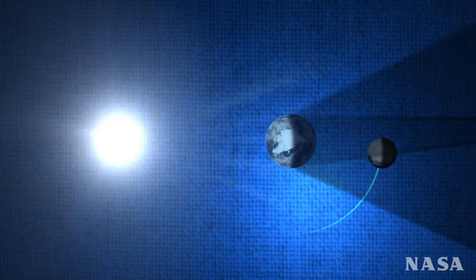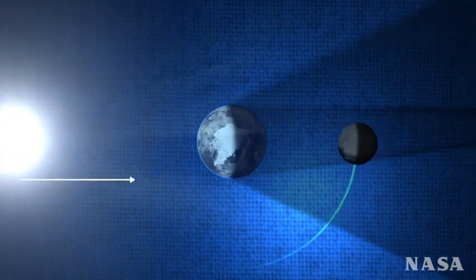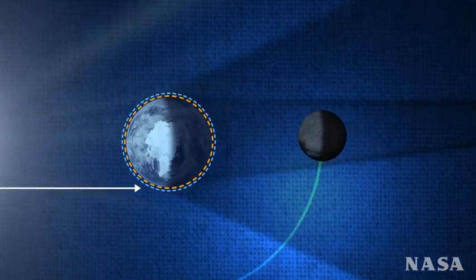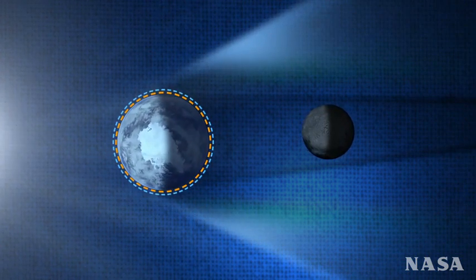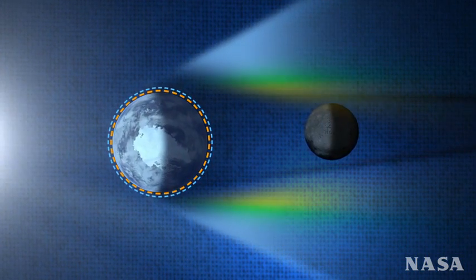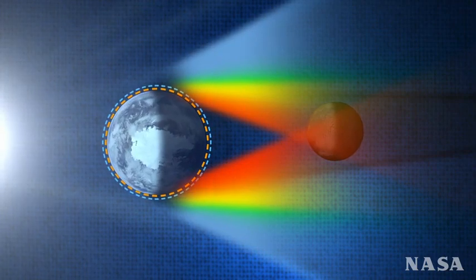When light from the sun goes by the side of the Earth, it passes through a long and thick layer of Earth's atmosphere. Shorter wavelengths of sunlight, like blue, are scattered by the atmosphere, so by the time the light has finished its trip to the moon, more of the longer wavelengths, like red, are left over.